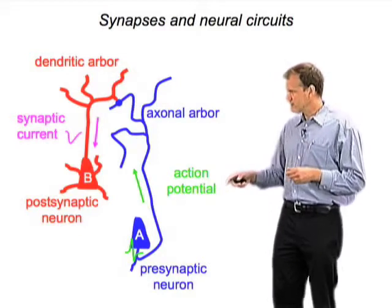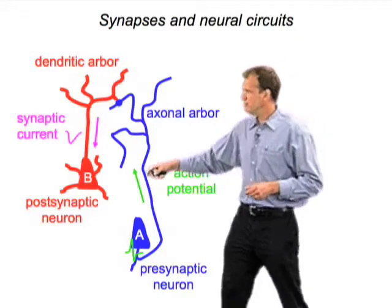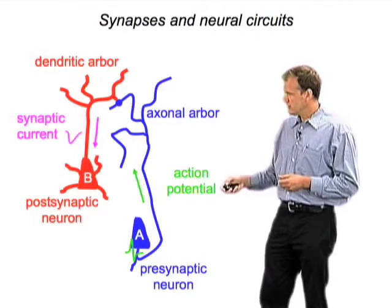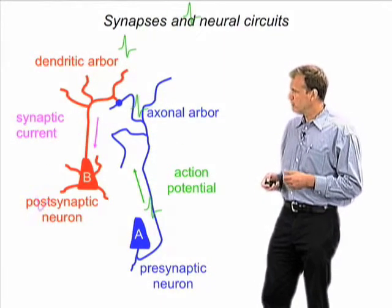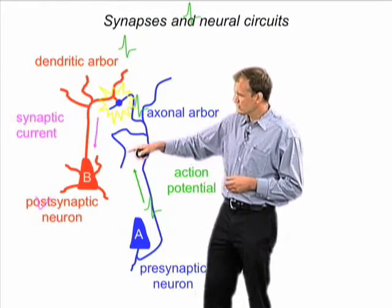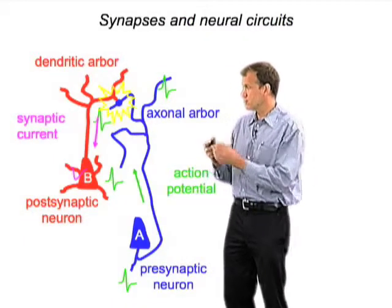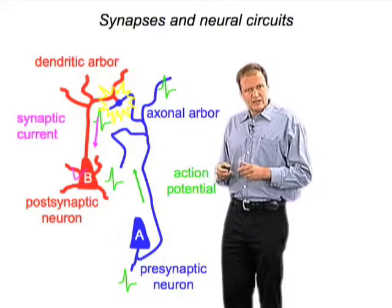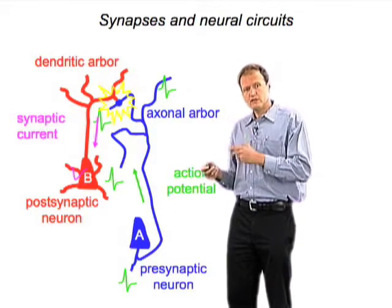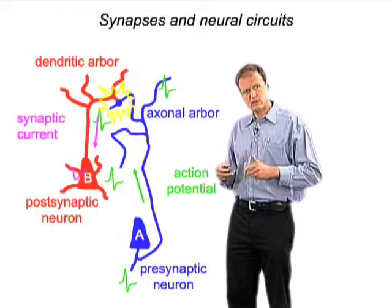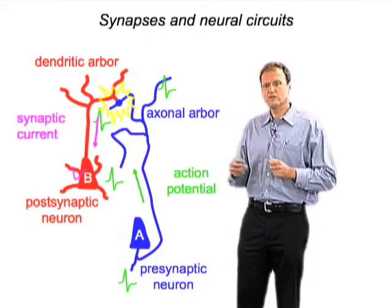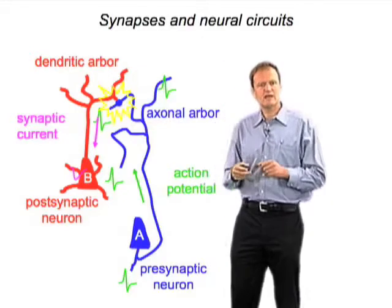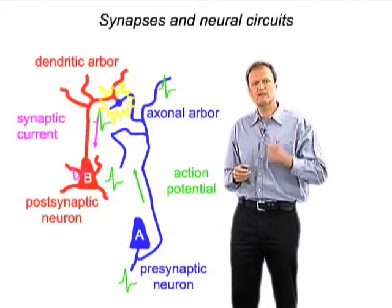Neurons have an output site — the axon here in blue — and an input site, the dendrite here in red. When an action potential is generated by presynaptic neurons, it propagates throughout the axonal arbor, and where axons and dendrites overlap in the neuropil, sometimes synapses occur. When the action potential reaches the synapse, it causes synaptic transmission. There are a large number of synapses in the dendritic and axonal arbors of individual neurons — neurons have about 10,000 outputs and 10,000 inputs — and individual synapses are really quite weak. It takes about 10 to 30 synapses firing almost simultaneously to drive the postsynaptic neuron to fire.